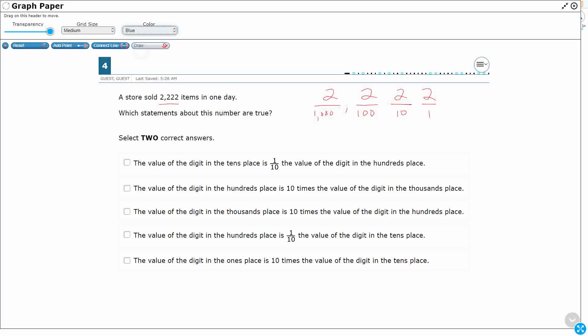So let's take a look at some of these statements. We're looking for two that are correct. The value of the digit in the 10s, well, they're all 2s, okay? So in order for this to work, to be 10 times greater, 10 times less, or 1/10th, they need to be the same digit. You can't have a 3 and a 4. They all have to be the same digit.